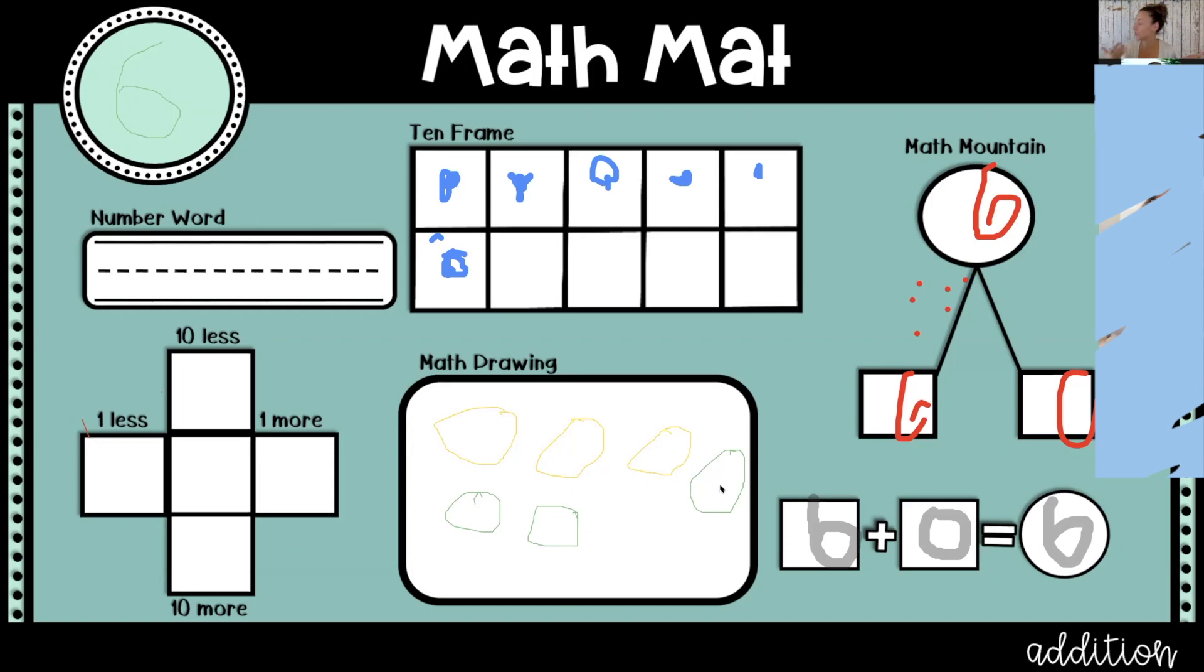So I'm going to write the number six down here, and I'm going to cross off ten less. So Dylan, yeah, zero might work, but I'm going to cross this off because we're not getting into that. But does anyone know, raise your hand if you know what is one more than six? Alana, what's one more than six? Seven. Seven.